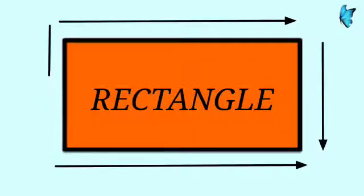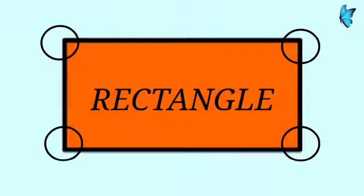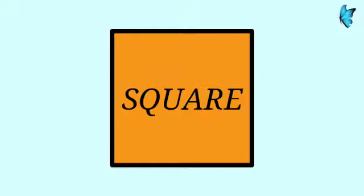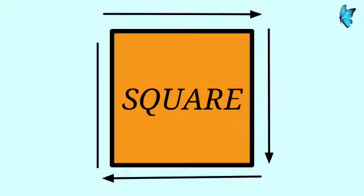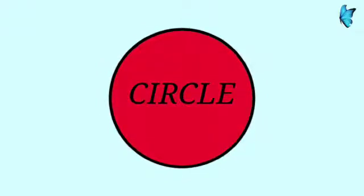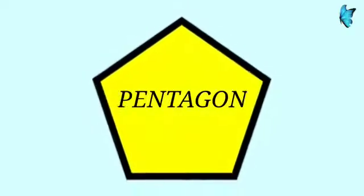This is a square. A square has four sides and four corners. Next we have a circle. A circle has no side and no corner. It is round in shape.